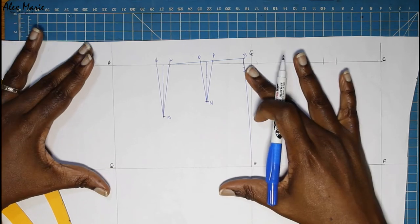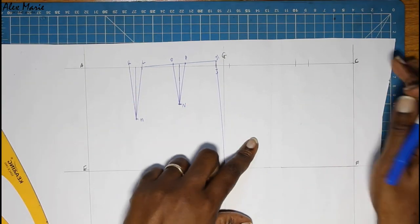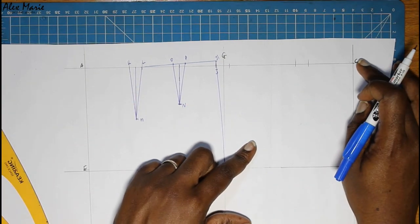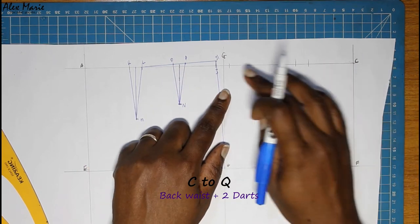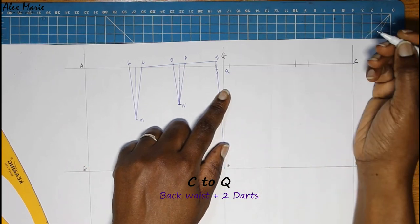All right, now we're going to do the same thing for the back. We're going to go from C to Q, put in your back waist plus. Remember, it's two darts. All this is in the worksheet.